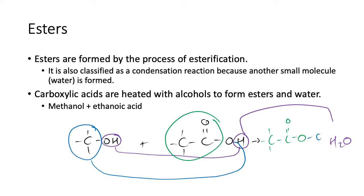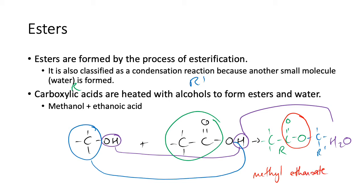Then it's going to add on that part from the alcohol. You can see that you've got an R and an R' group on either side of the ester group. The alcohol forms the R' group and the carboxylic acid forms the R group. That's why this substance is called methyl — from the methanol — ethanoate — from the ethanoic acid — methylethanoate.